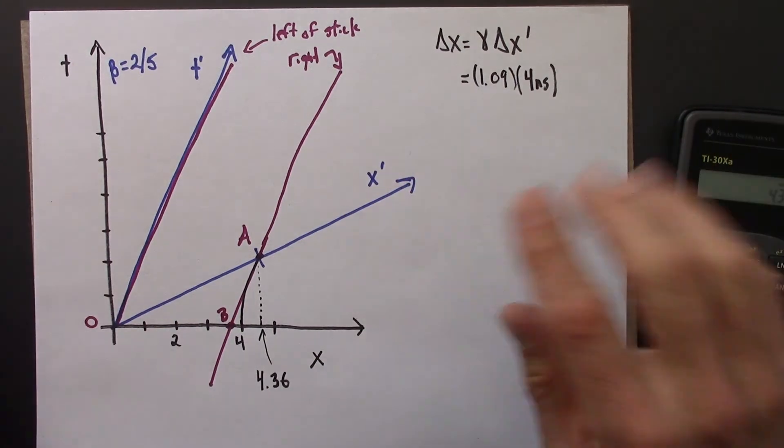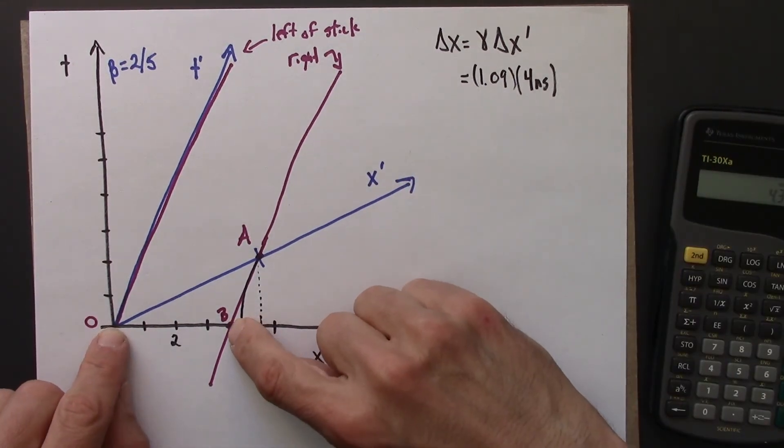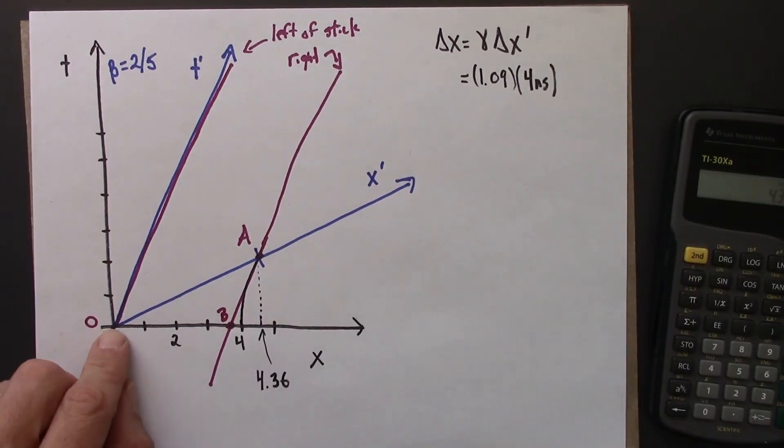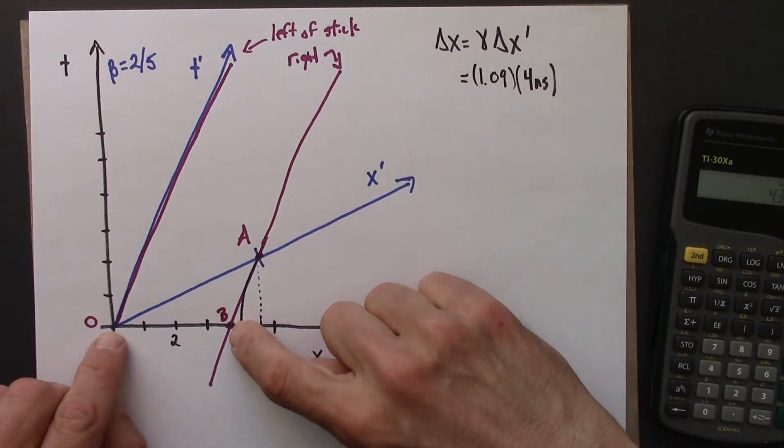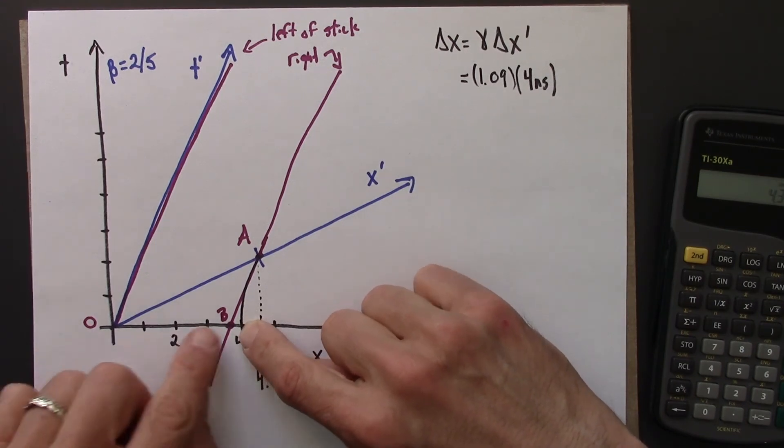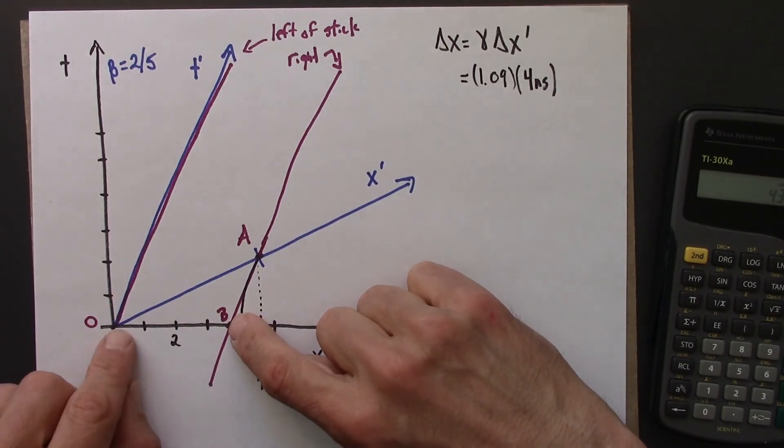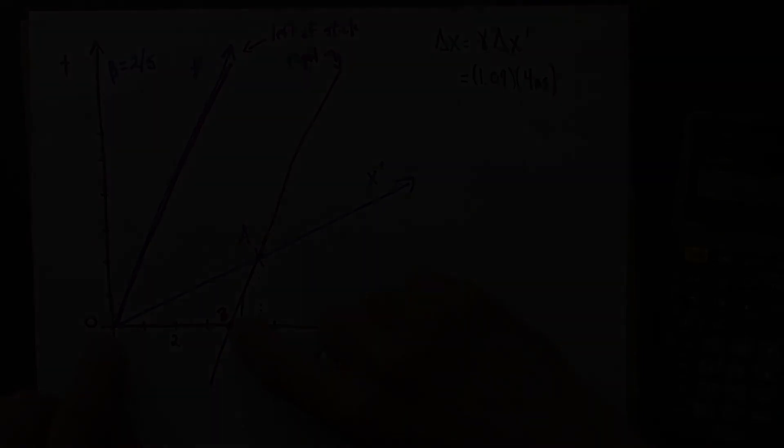Alright, so again, the point of this video is to show that the length of the stick when it's moving in Anna's frame is less than 4. In the next video, I'll do a bunch of algebra and derive the result so we can see exactly what the formula is for the length of the moving stick in Anna's frame.